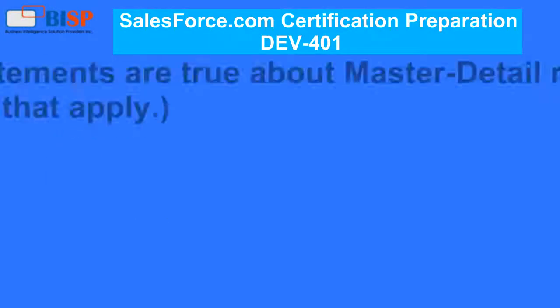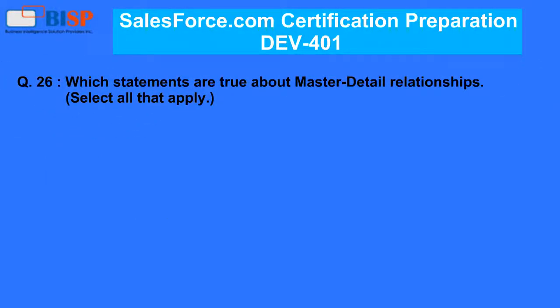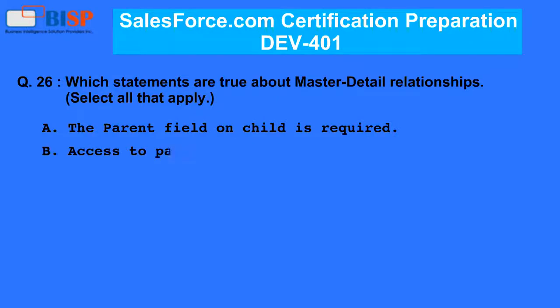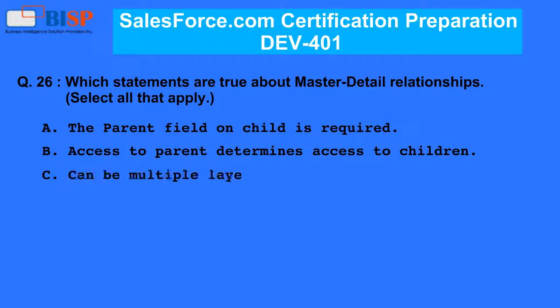Question 26. Which statements are true about master-detail relationships? A. The parent field on child is required. B. Access to parent determines access to children. C. Can be multiple layers deep.